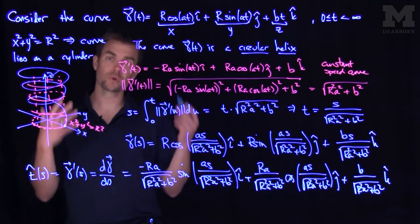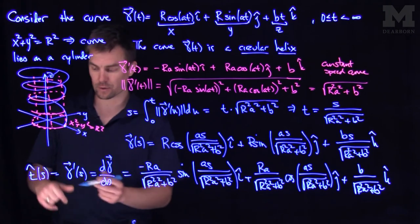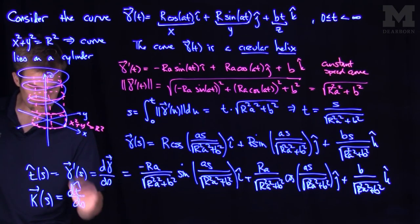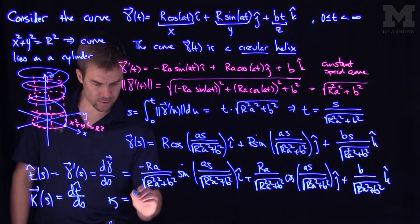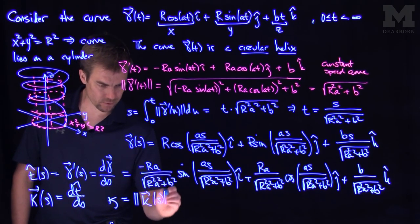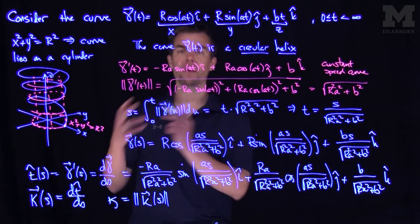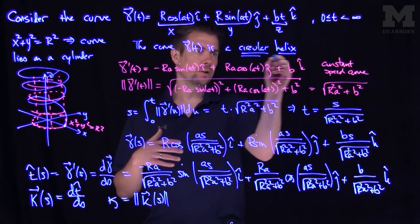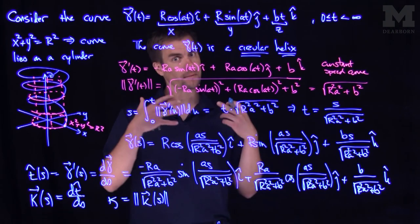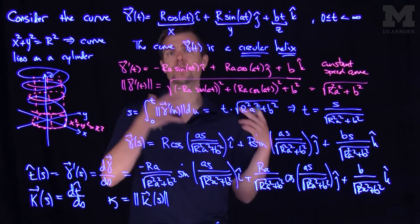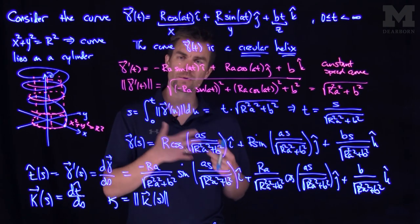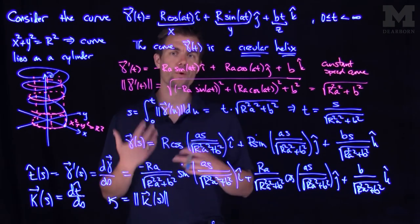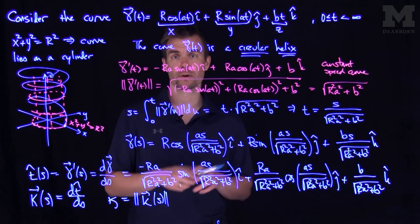To find the curvature or torsion, we take higher derivatives. The curvature vector is the derivative of the unit tangent vector with respect to s, and the scalar curvature is its magnitude. After calculation, you'll see the curvature is a constant depending on r, a, and b. Helices have constant curvature and, by computing another derivative and a cross product, also constant torsion. In general, a generalized helix is a curve for which the ratio of curvature to torsion is constant. Thank you very much.